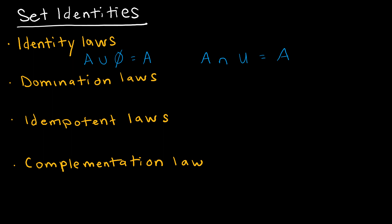The domination law: A union the universe would of course be the universe, because A union looks at anything that's in either one of those sets, and the universe is everything. Similarly, A intersect the empty set would be the empty set, because in an intersection it must belong to both sets, and there's nothing contained in both A and the empty set.